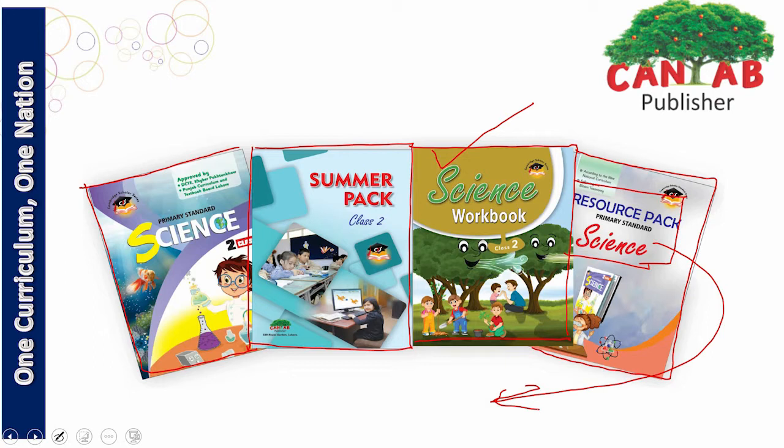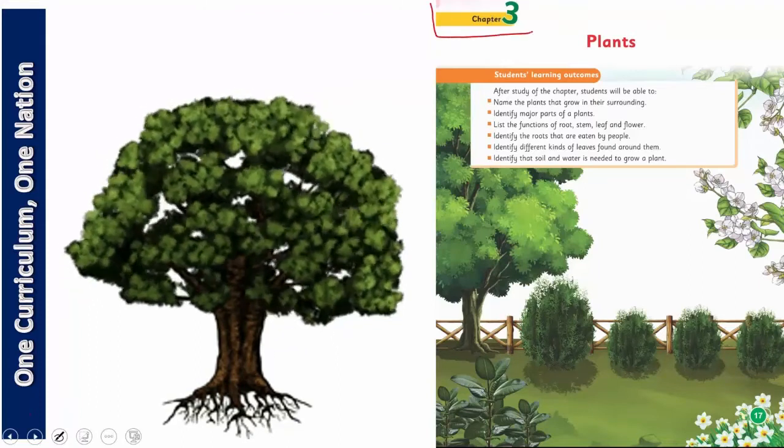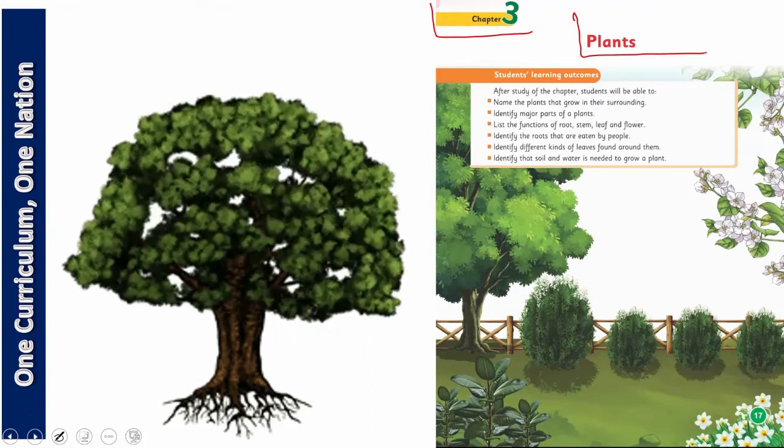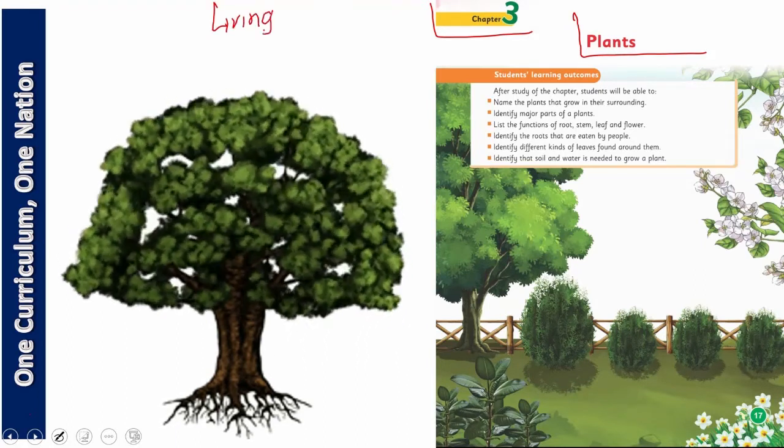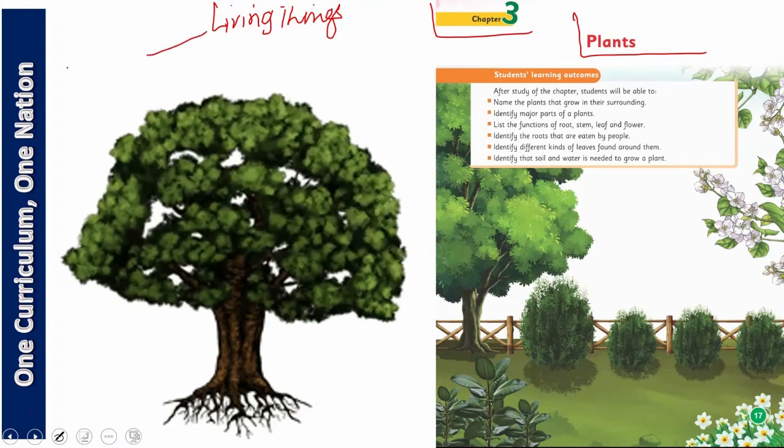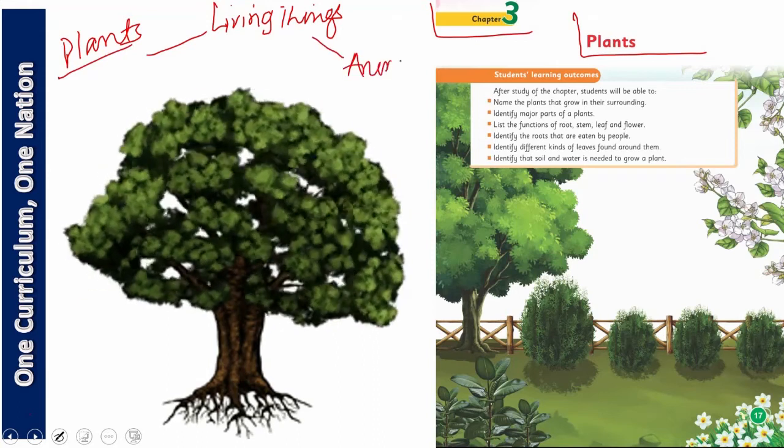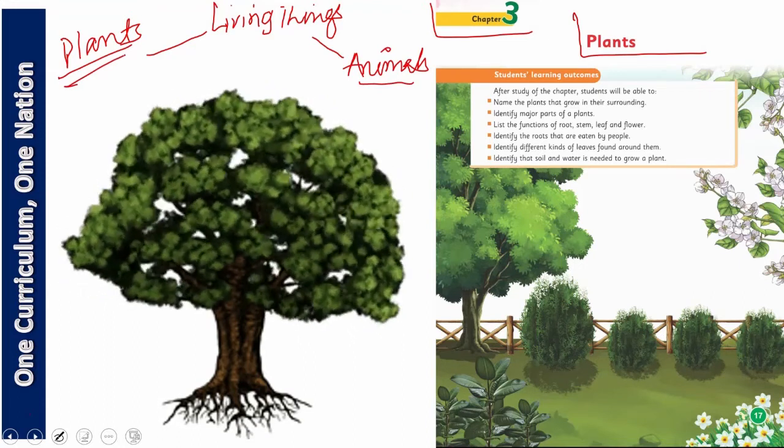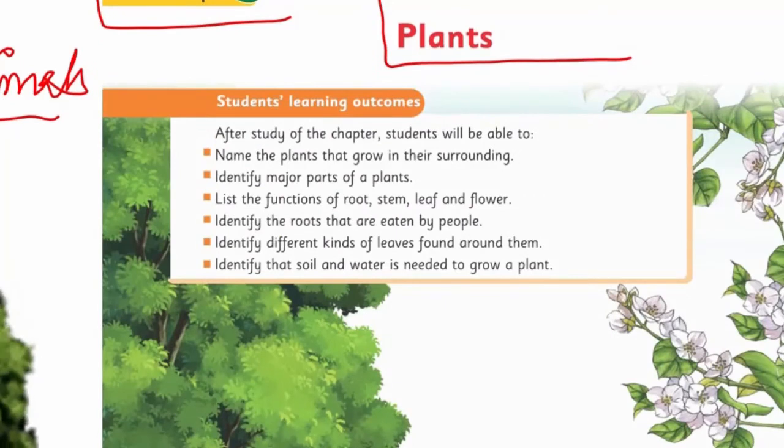So my dear students, get ready to learn Science 2. Today we are going to start chapter number three and the chapter is Plants. In the previous class we learned about living and non-living things, and after that we divided living things into two big groups: number one, plants, and number two, animals. So dear children, today we will study plants in detail. This is a very interesting chapter and I'm sure that you will enjoy learning these concepts.